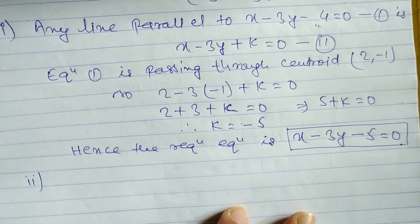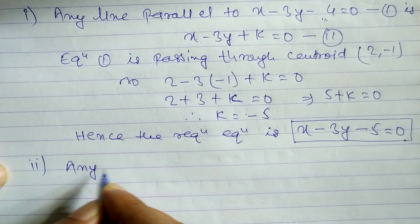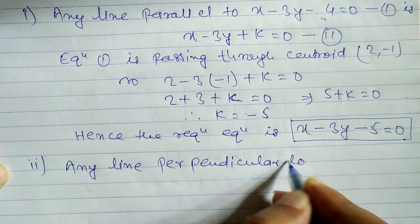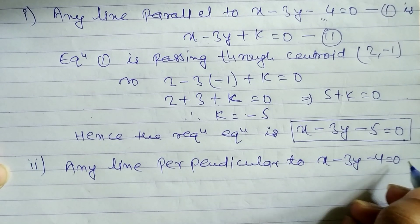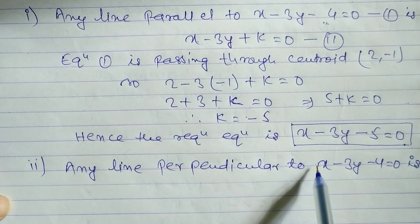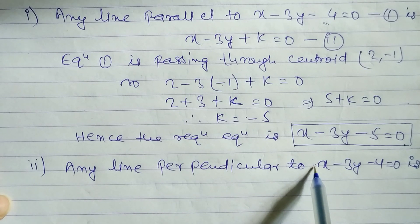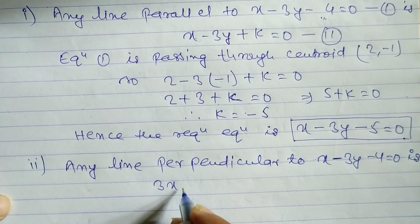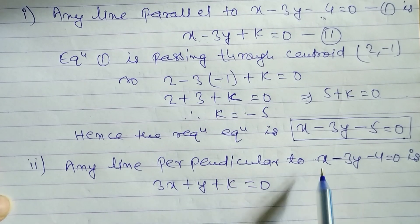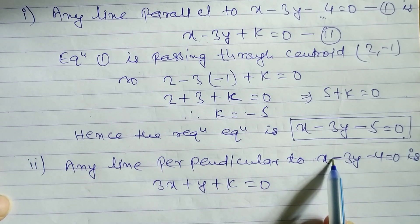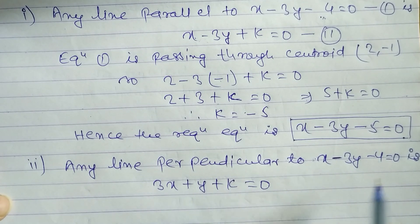For part two, we find a line perpendicular to x - 3y - 4 = 0. For a perpendicular line, we interchange the coefficients of x and y, and change the sign. The coefficient of x becomes 3 and the coefficient of y becomes 1, with the sign changing from minus to plus. So the perpendicular line equation is 3x + y + k = 0.